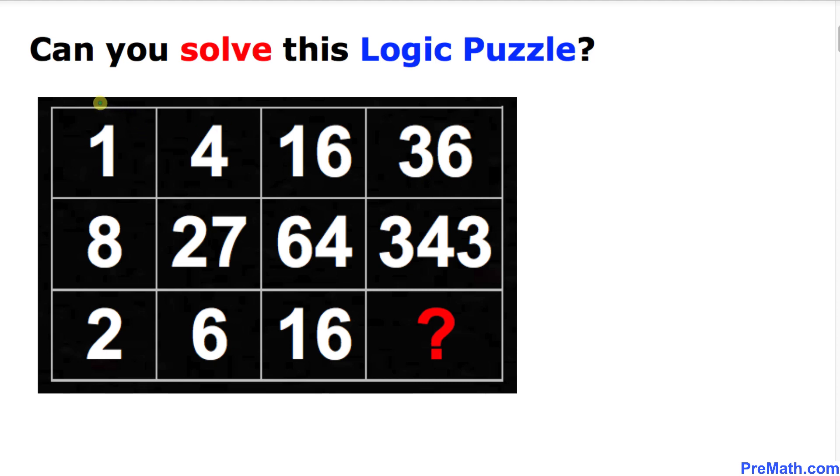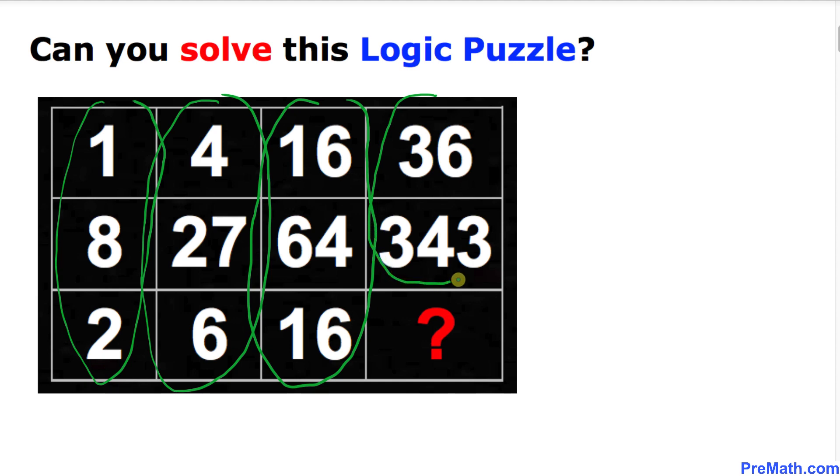Let's look at the first column. We have the numbers 1, 8, 2. In the second column we have 4, 27, 6. The third column has 16, 64, 16. And finally in the fourth column we have 36 and 343.